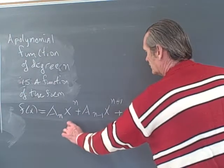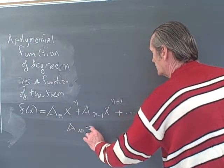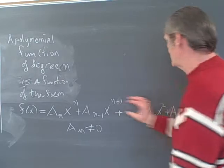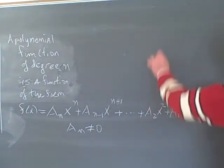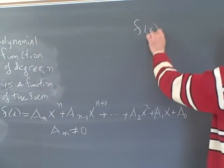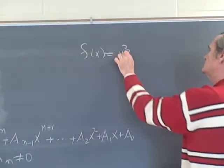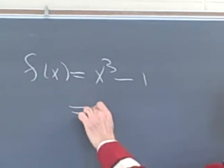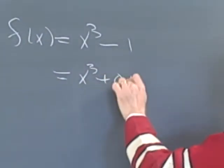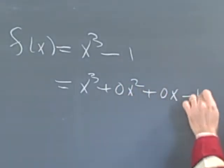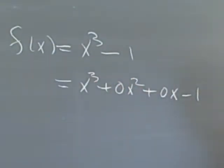And we want our coefficient of the highest degree term to be non-zero. Now, some of these other coefficients can be zero. For example, you can have a polynomial like x cubed minus 1, and so that's x cubed plus 0x squared plus 0x minus 1. That's an example of a polynomial.